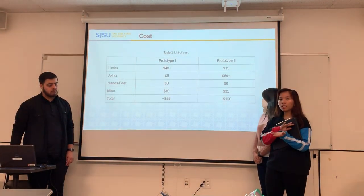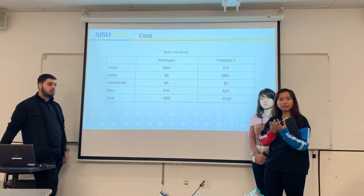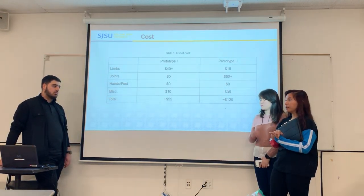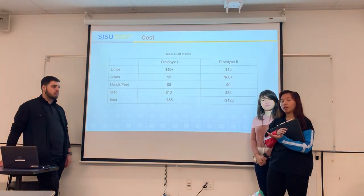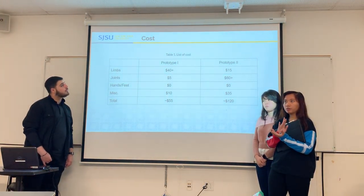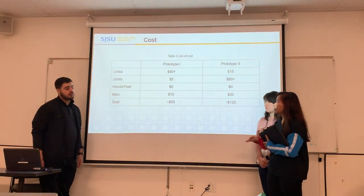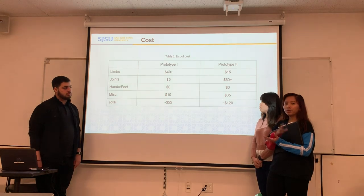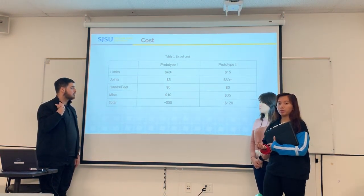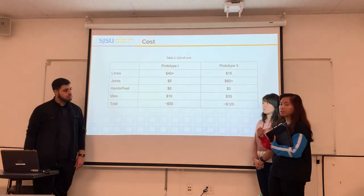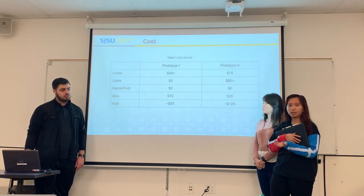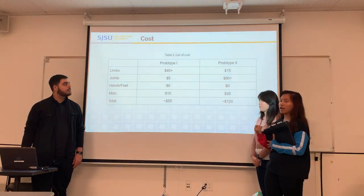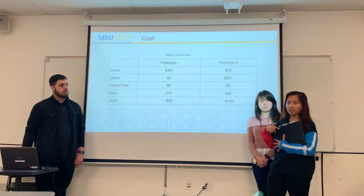For our cost, it seems a bit expensive for our dummy, ranging from $50 to up to $120, but this is actually a very good price for a dummy. The device is still basic and missing a lot of components. For prototype one, most of the money was allocated to the limbs, and in prototype two, most was allocated to the joints, which is the most important part of the device. We also spent money on miscellaneous items to help put the device together, and we did not spend any money on hands and feet since we're still working on that.